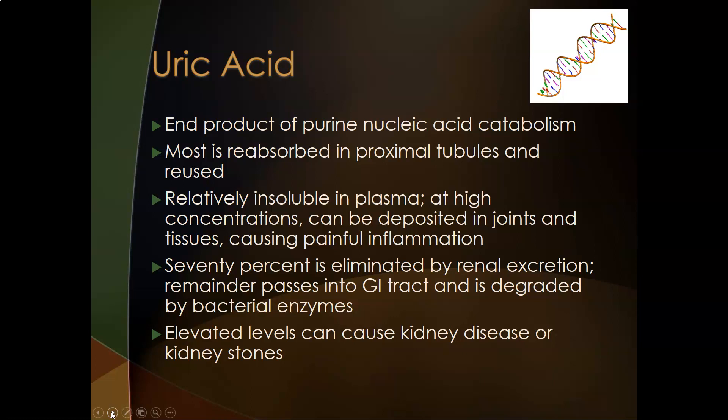Uric acid is relatively insoluble in plasma, so it tends to crystallize. At high concentrations, those crystals can be deposited in joints and tissues, causing painful inflammation — and that would lead to things like gout. Seventy percent of uric acid is eliminated by renal excretion, so as long as your kidneys are working fine, it's being cleared.